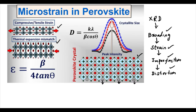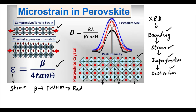We have this formula to calculate the microstrain, represented by epsilon. Beta is the full width at half maximum (FWHM), as we have seen in previous videos, and that is in radians. The angle theta is the Bragg angle, which we can calculate from the XRD data.